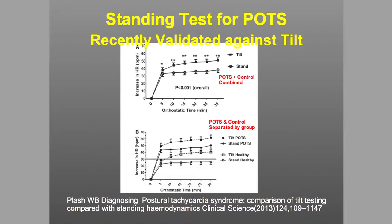A longer stand or longer tilt was far less specific and sensitive, so we're left with a 10-minute screening test for POTS in adults. Notably, the way he did this test was to have subjects lie down for an entire hour beforehand, so strictly speaking it's only applicable to people who have been recumbent for an entire hour, because fluid redistribution occurs — it can take about an hour or two for fluid to shift back from the lower to the upper body.